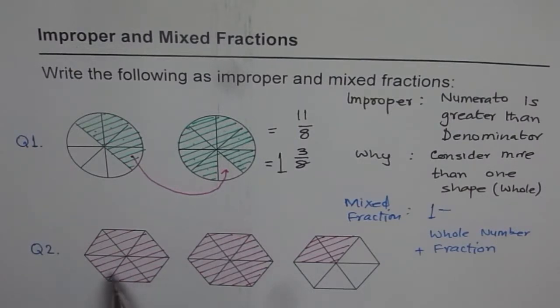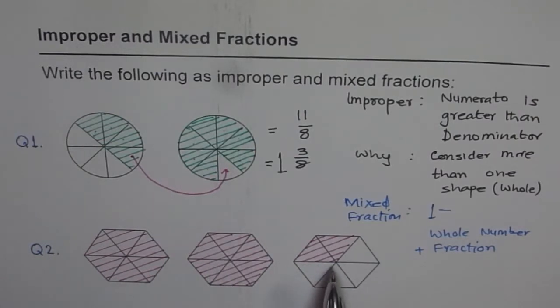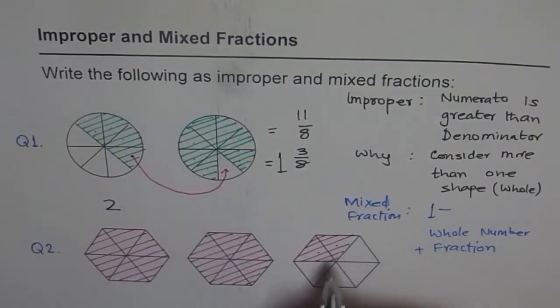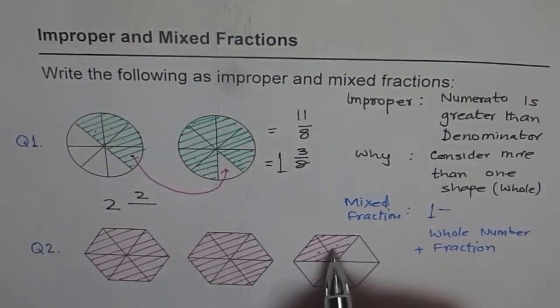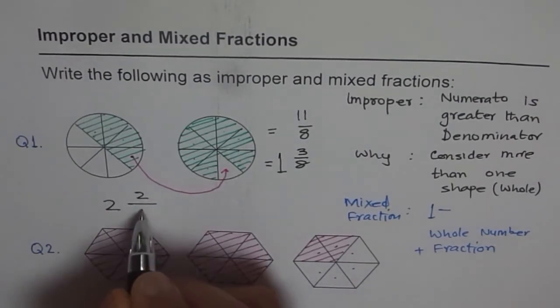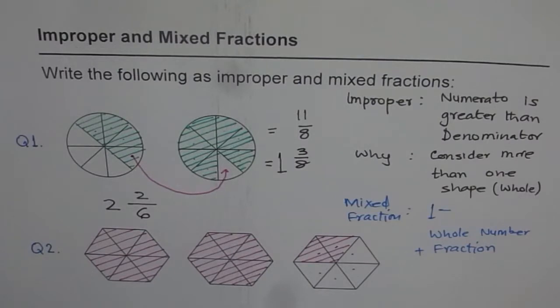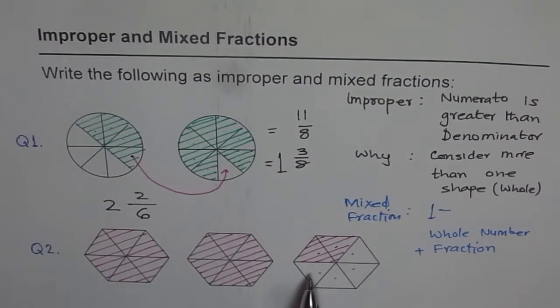Now let's do this one. That one is straightforward, done already for you. 2 wholes, right? Let me write this as 2 wholes and 1, 2 out of how many? 1, 2, 3, 4, 5, 6. 2 out of 6. So that is how you can write this as a mixed fraction.